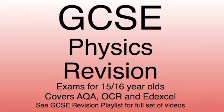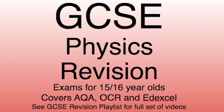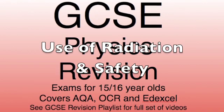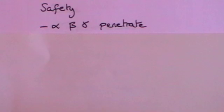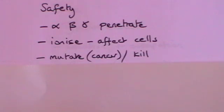Today we're continuing with our GCSE physics revision series, looking at use of radiation and radiation safety. As we recall from last video, we need to treat all radioactive material with safety. All of these rays given out by decaying atoms can penetrate into bodies. They will penetrate to different degrees, but they all can penetrate to some extent. And when they do, they ionise — they affect the cells by kicking electrons off — and this can lead to mutations of cells, which in some cases can lead to cancer.